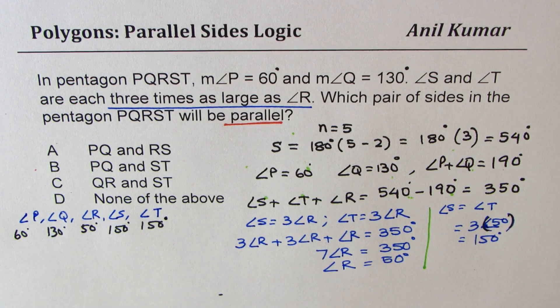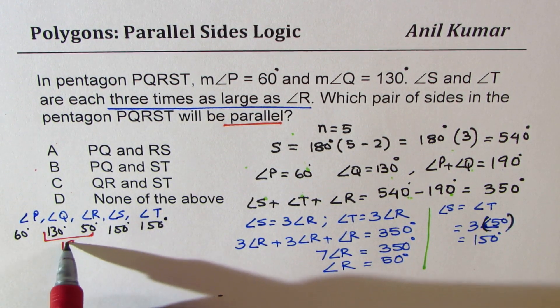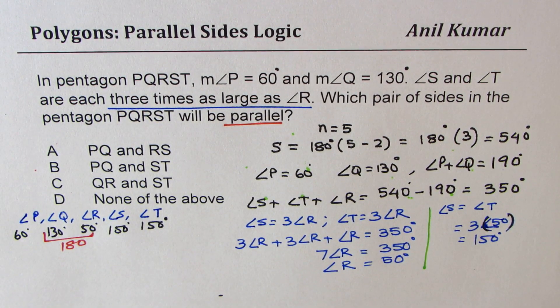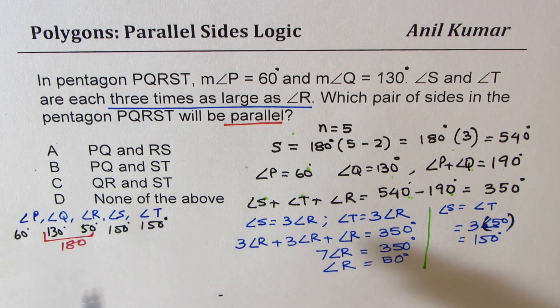So what you notice here is that this sum is 180. The angle Q and R sum is 180. So this sum is 180, that means the sides which this connects are parallel. Do you understand?